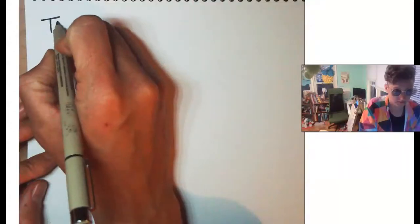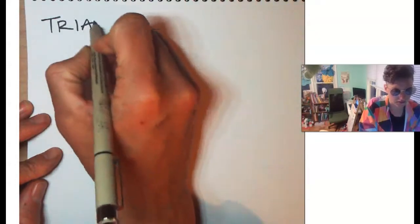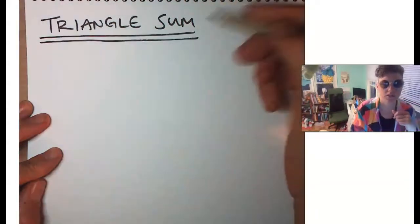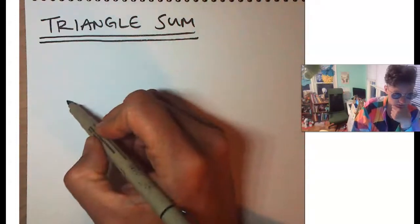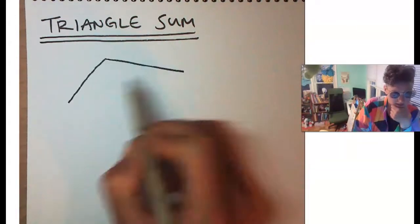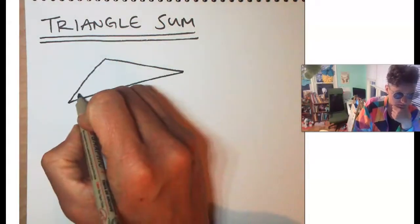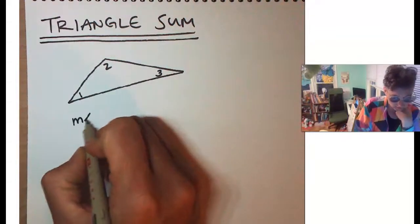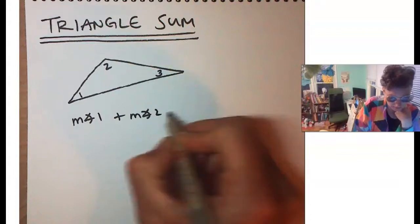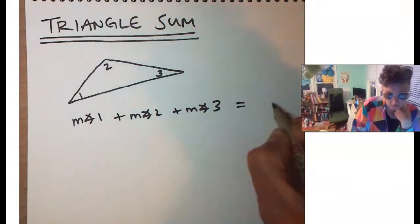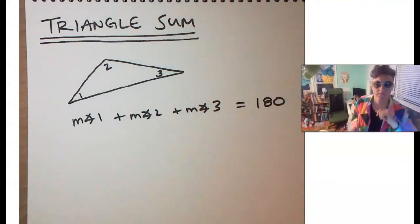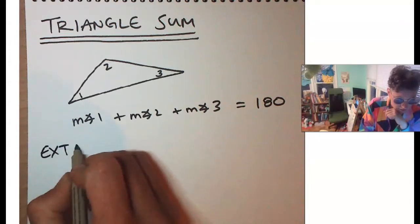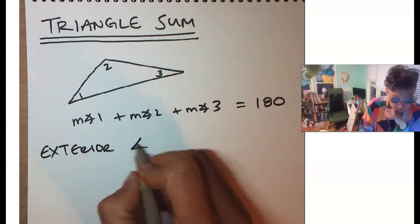Now we're going to talk about two theorems related to the angles of a triangle. First, the Triangle Sum Theorem. 'Sum' means the answer to an addition problem. This theorem says: for any triangle, no matter what it looks like, the measure of angle one plus the measure of angle two plus the measure of angle three equals 180 degrees.